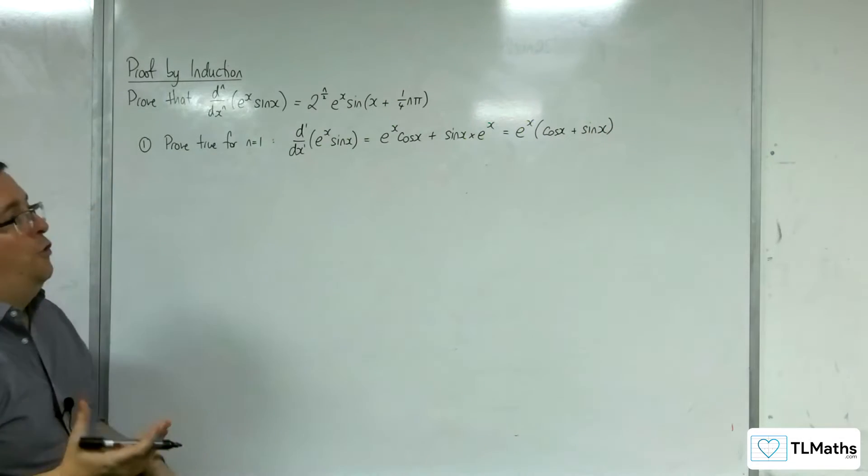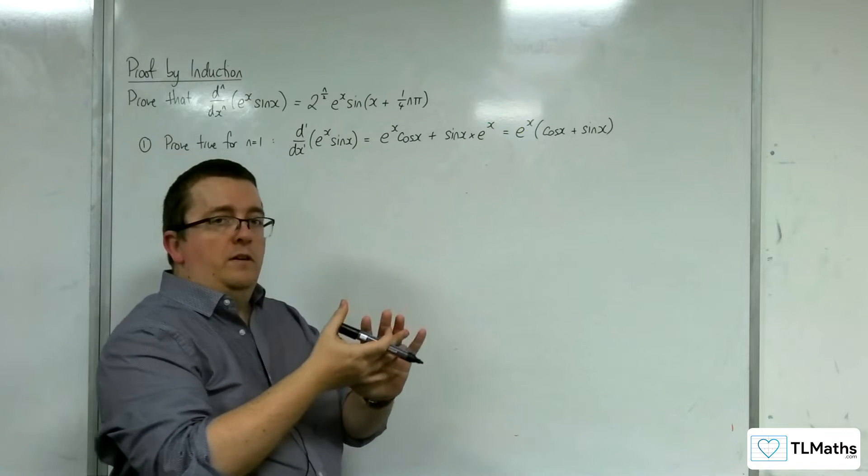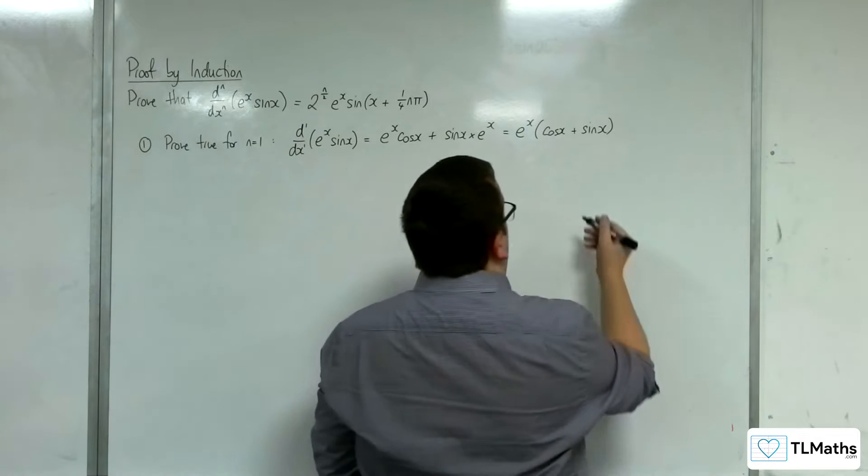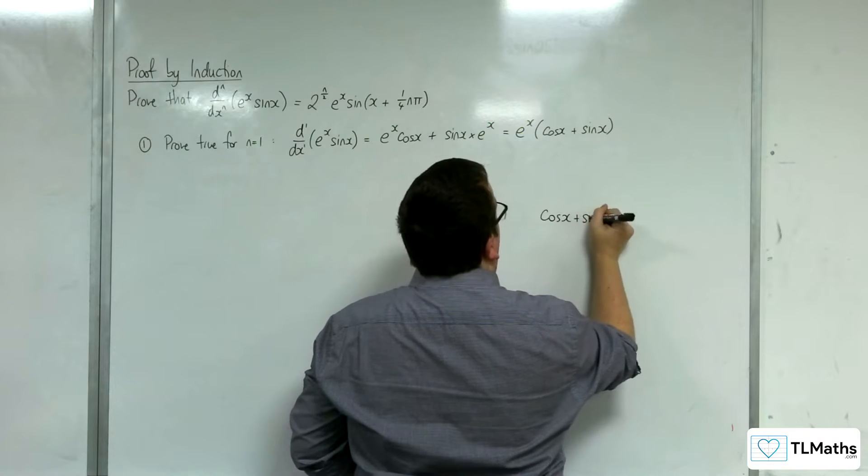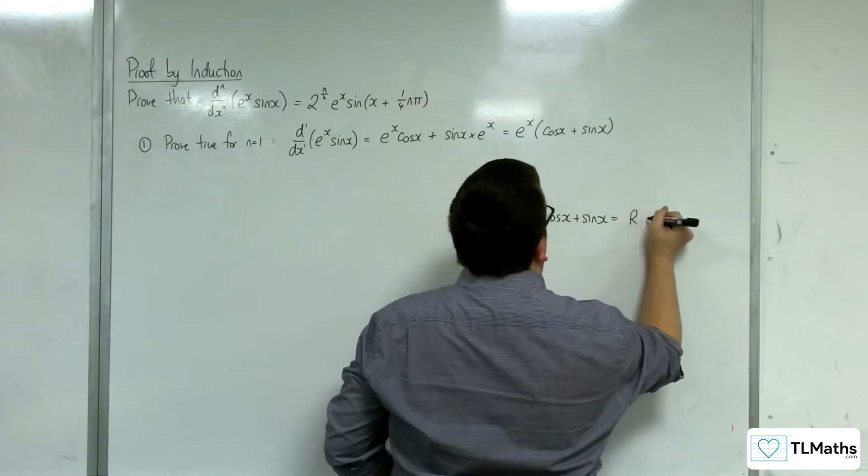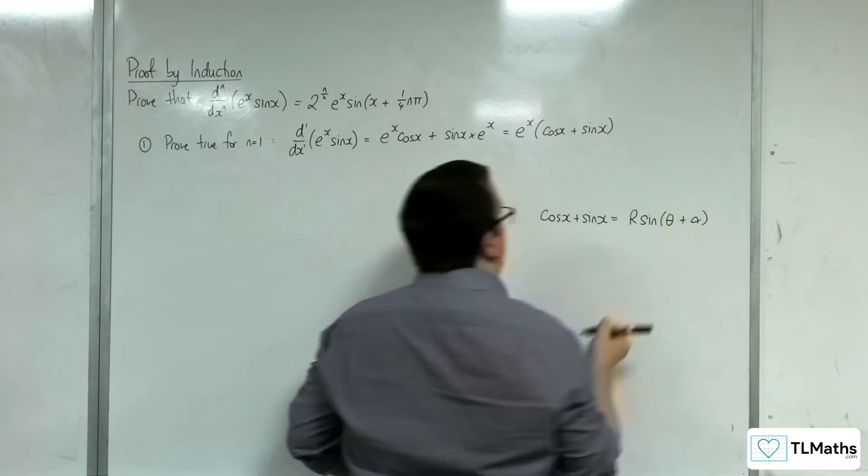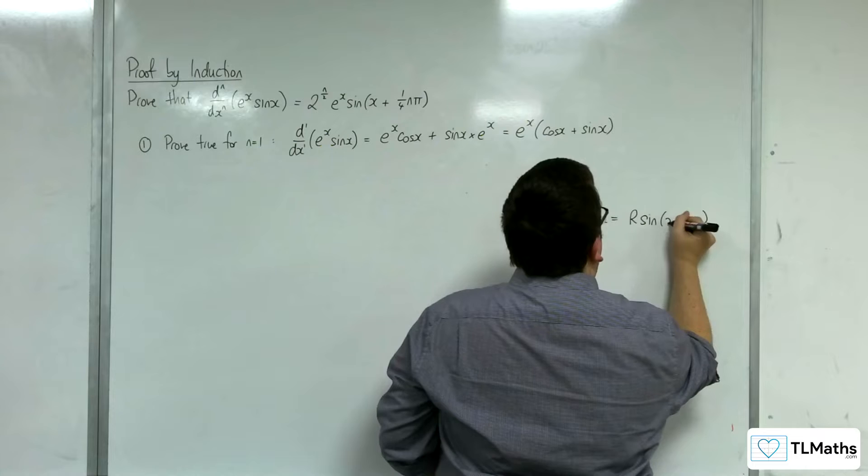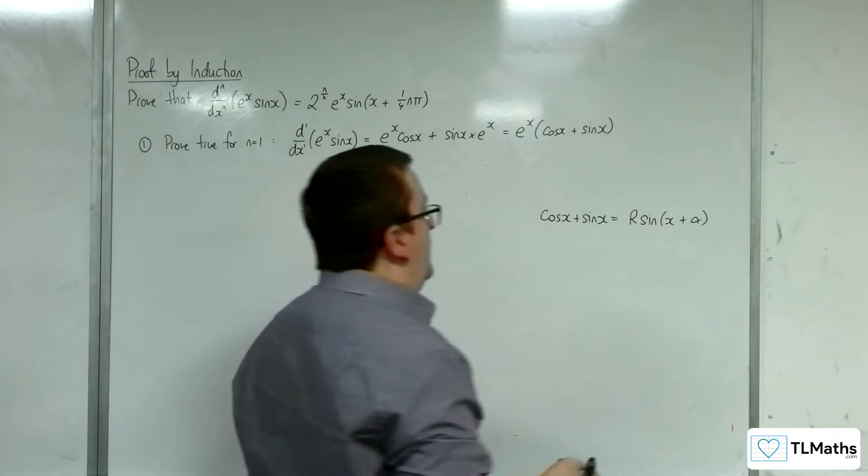Now to get this into the format that I want, I'm going to need to use the r sine theta plus alpha concept here. So the idea is that I want to write cosine x plus sine x in the form of r sine x plus alpha. So I want to find the r and the alpha to do that.